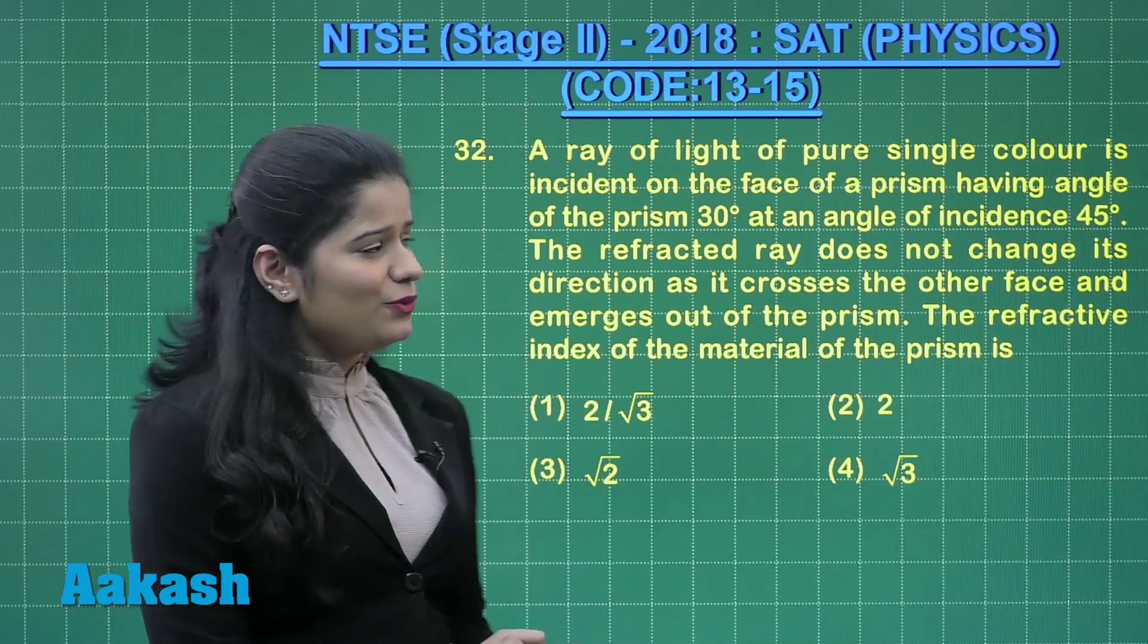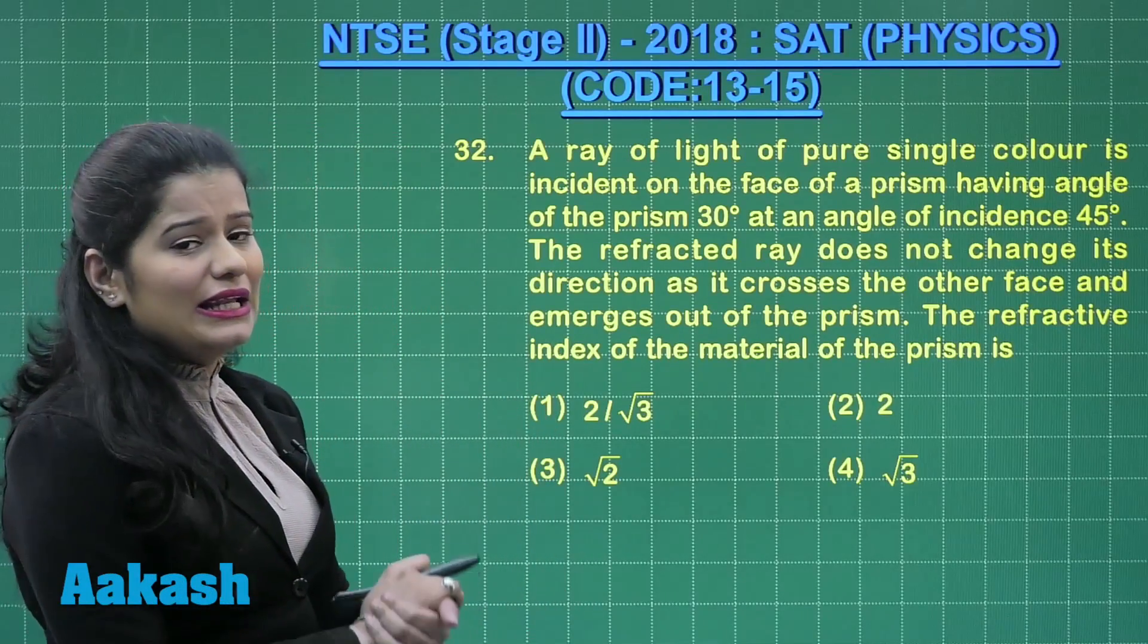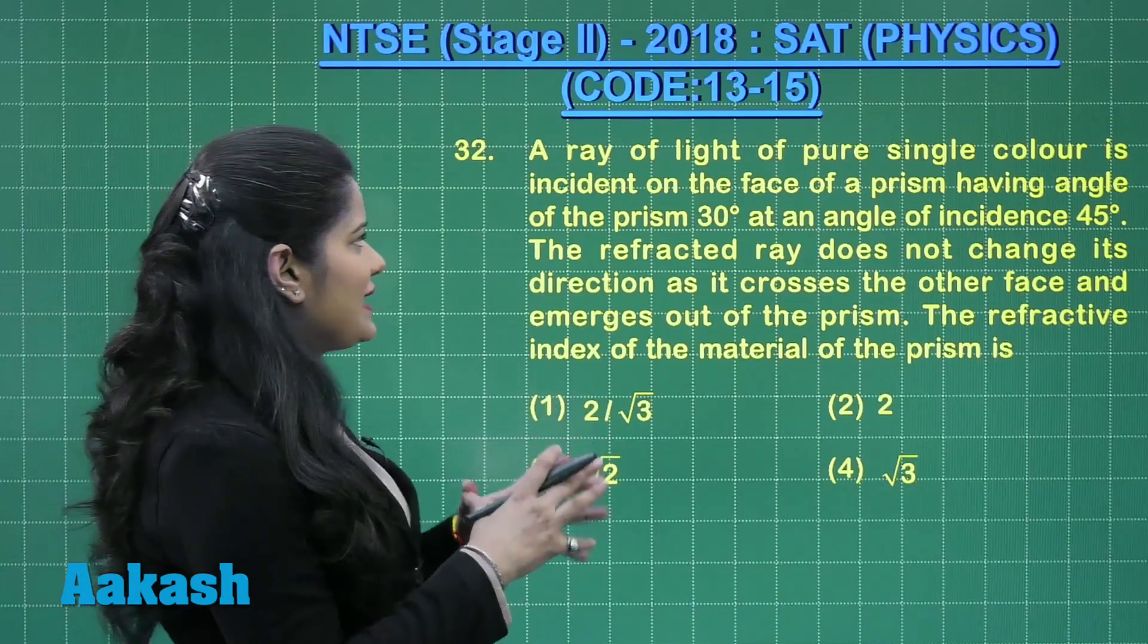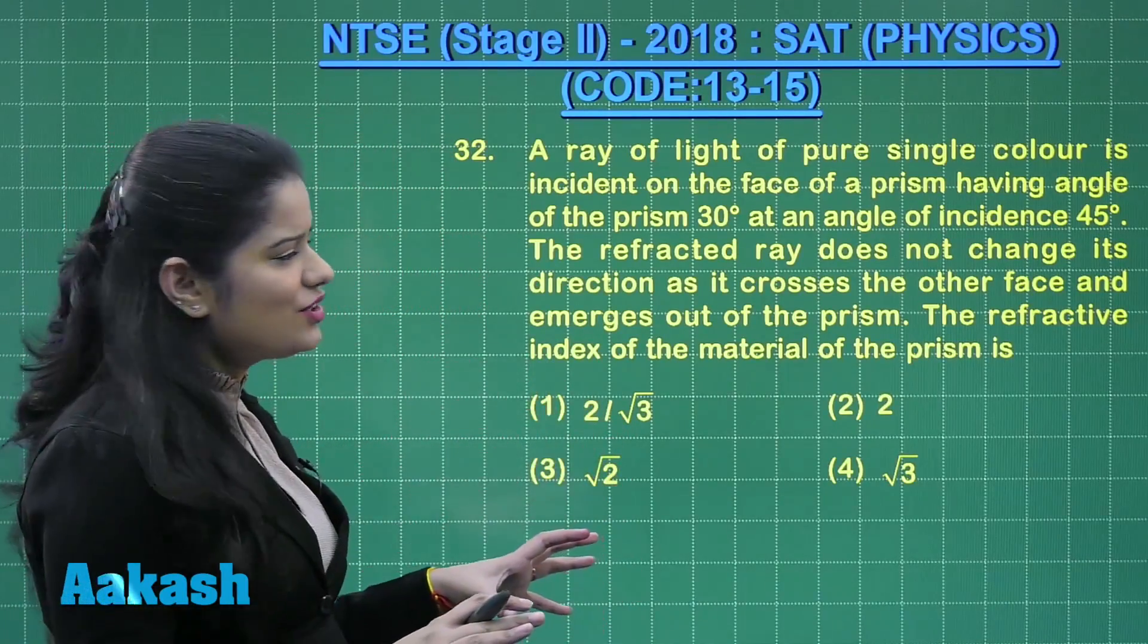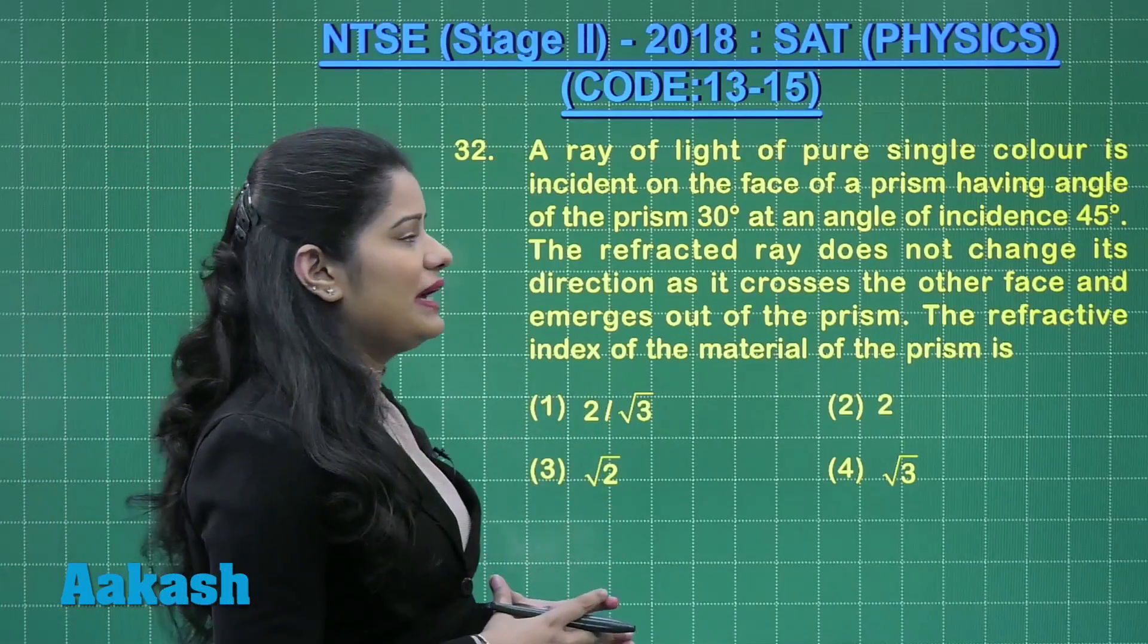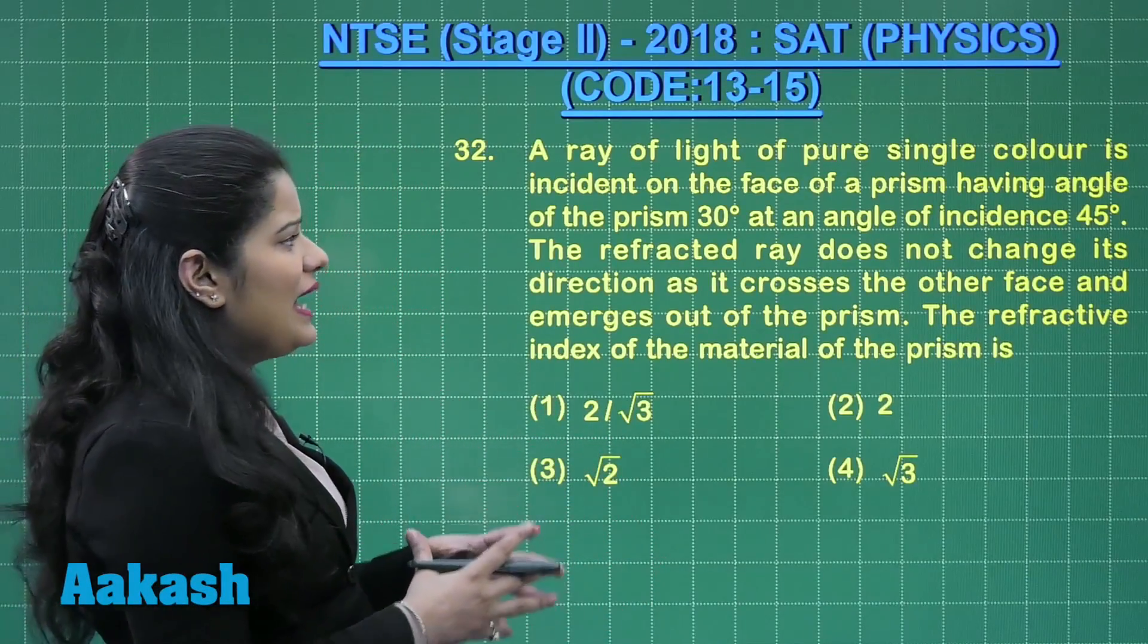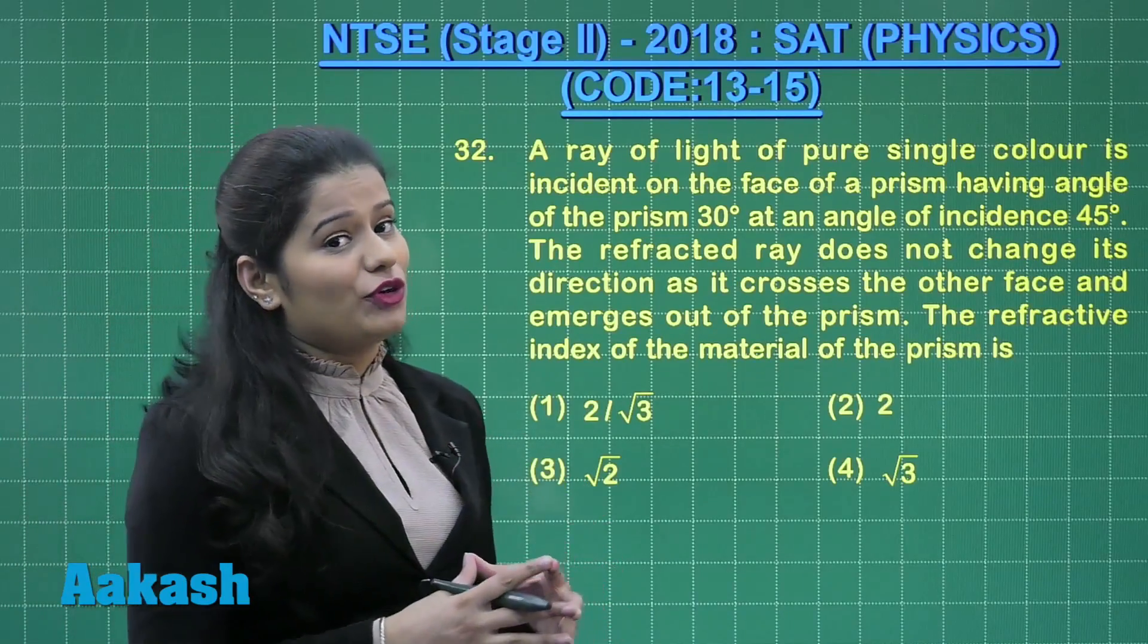Now let's take up the next question, which was question number 32. Let's read the question first. This question says a ray of light of a pure single color is incident on the face of a prism having angle of the prism 30 degrees at an angle of incidence 45 degrees.